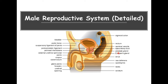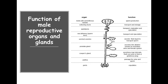We have the ejaculatory duct and the seminal vesicle, which plays a very critical role. On the outside front view of the copulation organ, the penis has an opening and a foreskin on the outside. The head of the penis is called the glans penis. The spongy tissue on the inside is called the corpus cavernosum, which is very important when we talk about erectile tissue. The bladder sits right above the prostate gland.